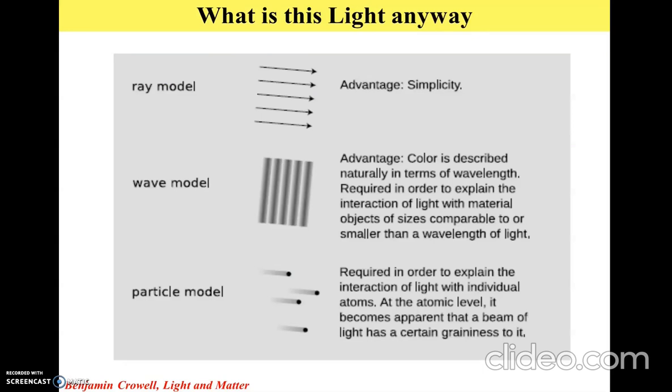One of them is the ray model, in which we draw straight lines depicting light going from one location to the other. Then you have the wave model in which we describe light as being a wave with a certain wavelength. And depending on the different wavelengths, you can have different colors of light.